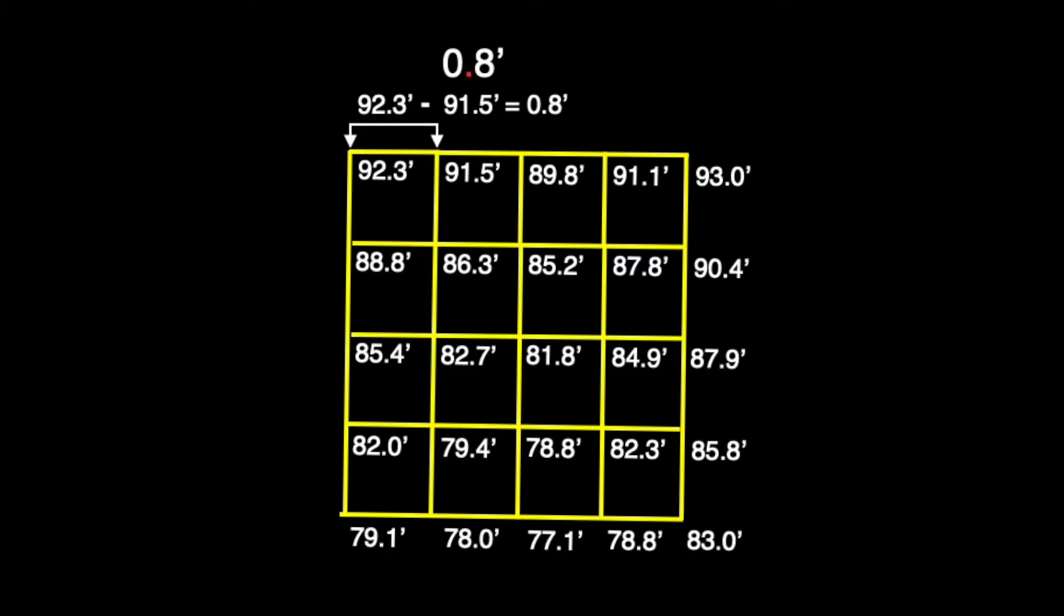all we have to do is move the decimal place over one space to the right, essentially multiplying it by 10, and what's revealed to us is the number of equally spaced units we'll have to divide the line into.